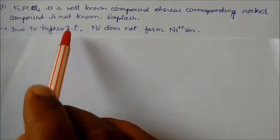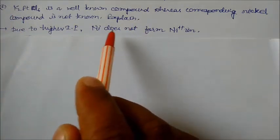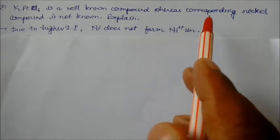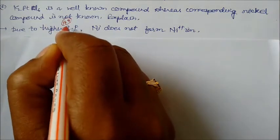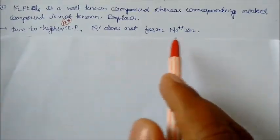Because in these cases platinum has high energy while the nickel does not have it, cannot form Ni4+ ion. Platinum can form 4+ which is more stable, while nickel even cannot form Ni4+ ion. That's why this is a well known compound.